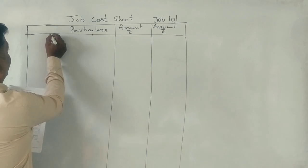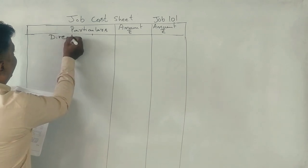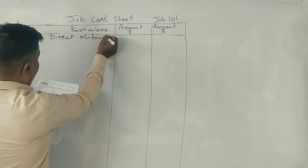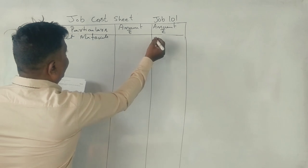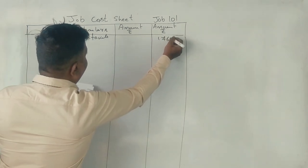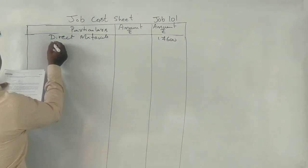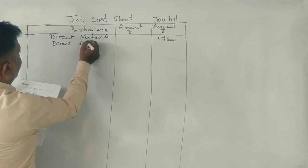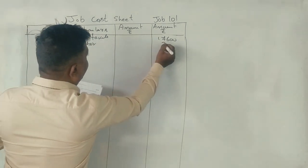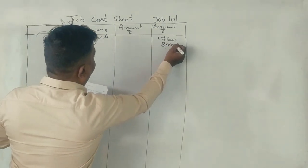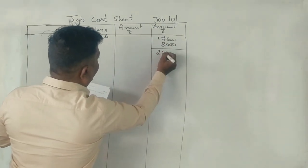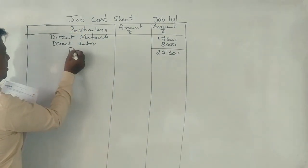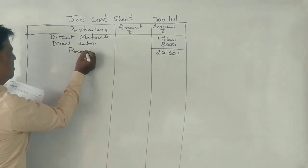We have direct material: $17,600. Direct labor is $8,000, and the prime cost is $25,600.